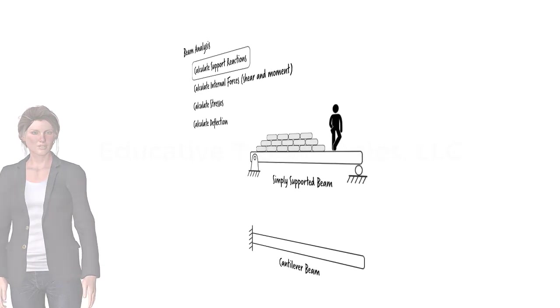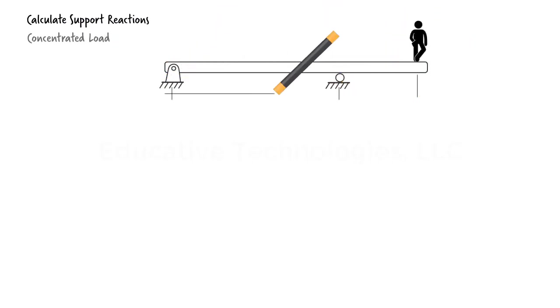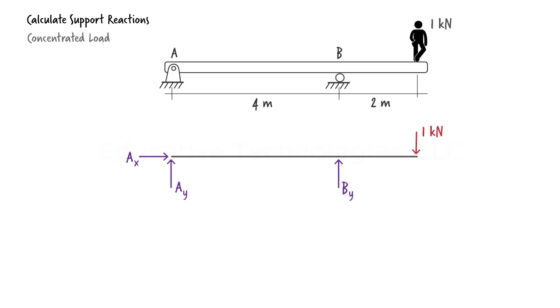Let's start with a simply supported beam with an overhang. The beam carries a concentrated load of 1 kN. What are the reaction forces at the pin and roller supports? We start by drawing the free body diagram for the beam.